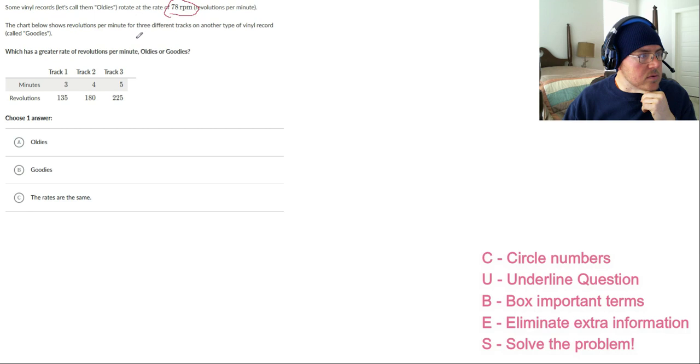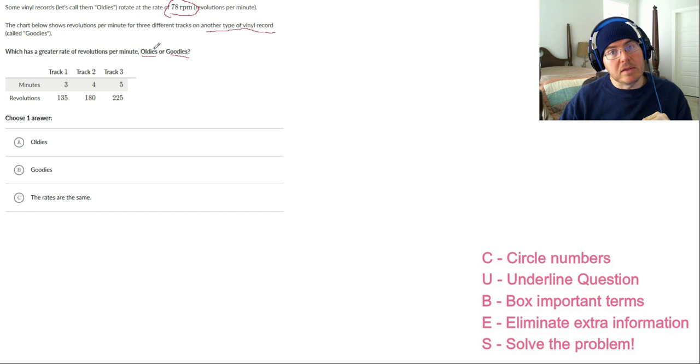The chart below shows revolutions per minute for three different tracks on another type of vinyl record called goodies. Which has a greater rate of revolutions per minute, the oldies or the goodies? So we're comparing rates. That is the slope of a function.